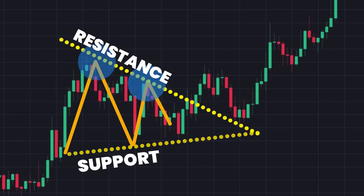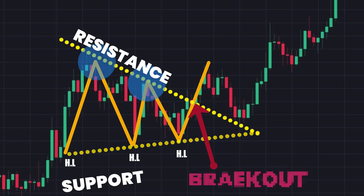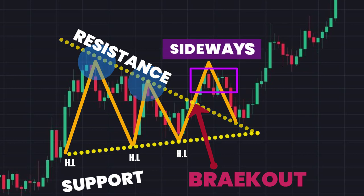If the price is making another higher low and approaching the resistance level, there is a higher probability for a breakout to happen. If the price breaks through the resistance level and goes up, it will be a breakout. But it won't suddenly go up at a higher pace — most of the time after the breakout, the market remains in the same price range, as shown in the purple color box.